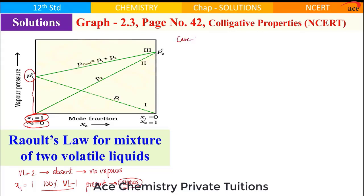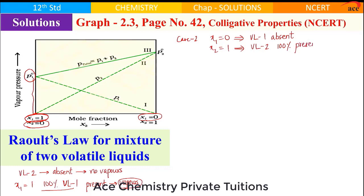In case 2, x1 value is 0, meaning volatile liquid 1 is absent. There are no components of volatile liquid 1, and when x2 value is 1, volatile liquid 2 is 100% present — that means pure volatile liquid 2. If talking about pure volatile liquid 2, all vapors will be due to volatile liquid 2, therefore P2°. This will be vapor pressure only due to volatile liquid 2.